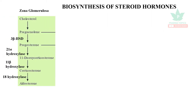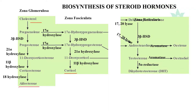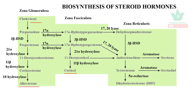Let us see the biosynthesis of steroid hormones. All these are steroid hormones because they contain cholesterol. This cholesterol contains the ring called cyclopentoperhydrophenanthrene ring. From that, in the zona glomerulosa, with several enzymes, aldosterone — the mineralocorticoid — is secreted. In zona fasciculata, a series of reactions synthesize the glucocorticoid cortisol. In the zona reticularis, different enzymes convert the steroids into androgens and estrogens.